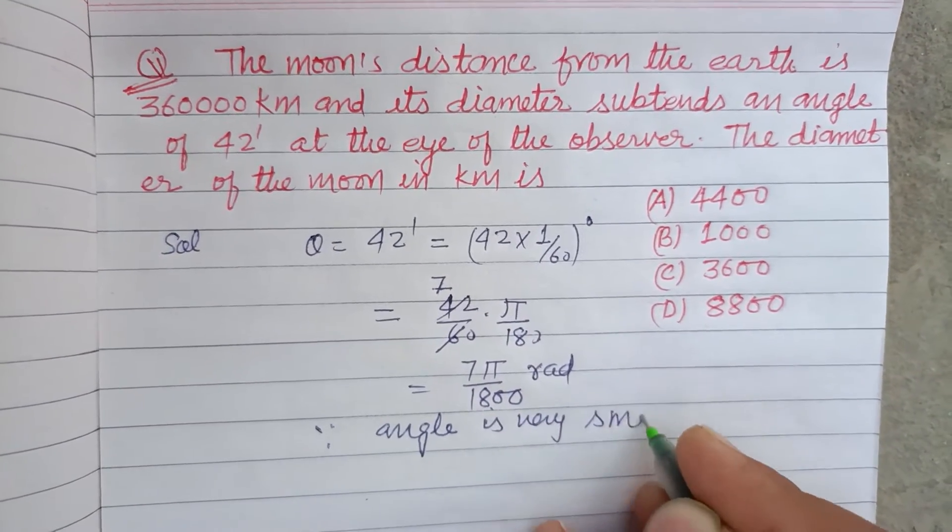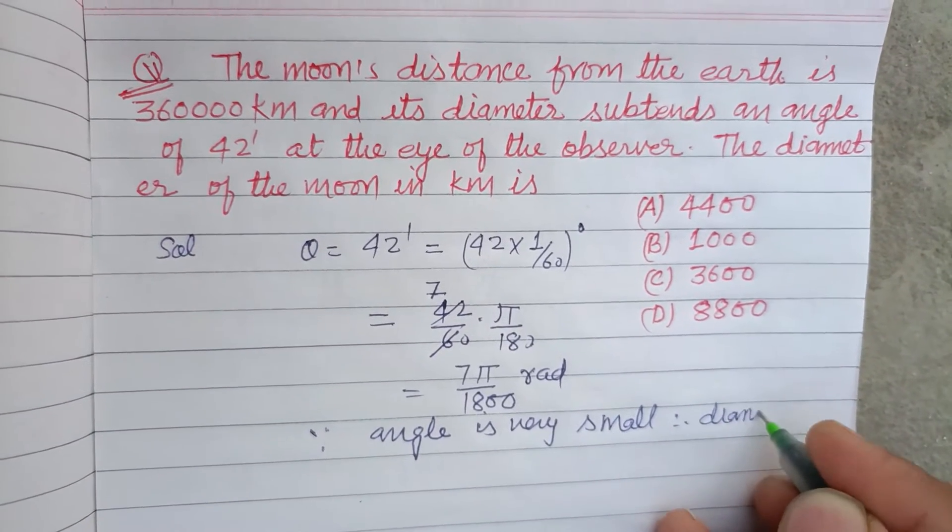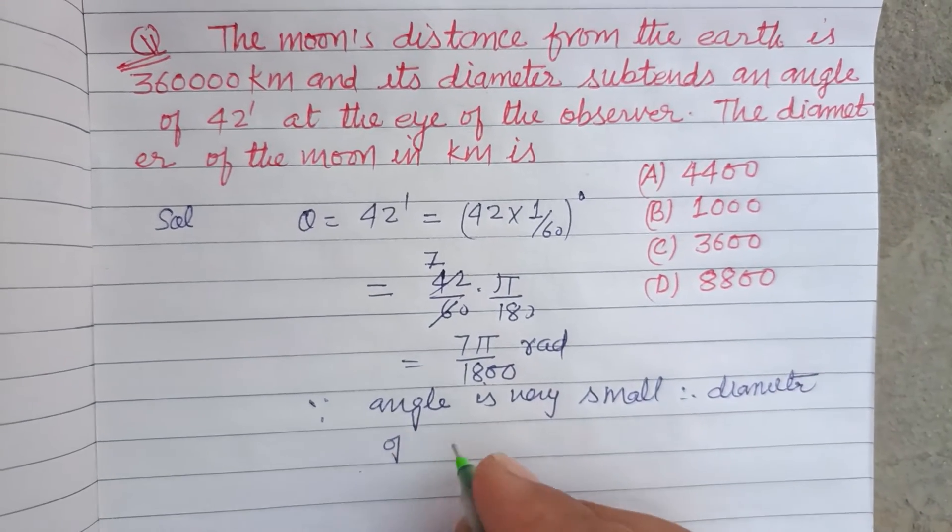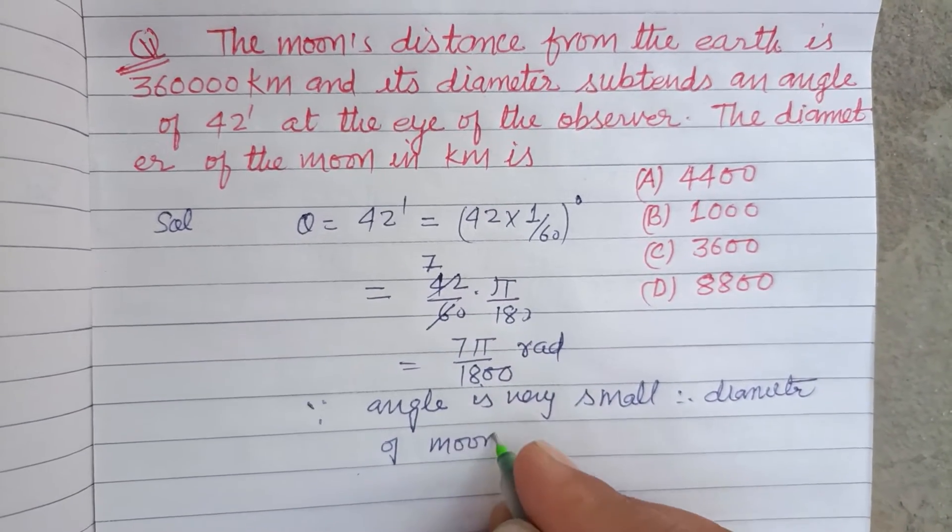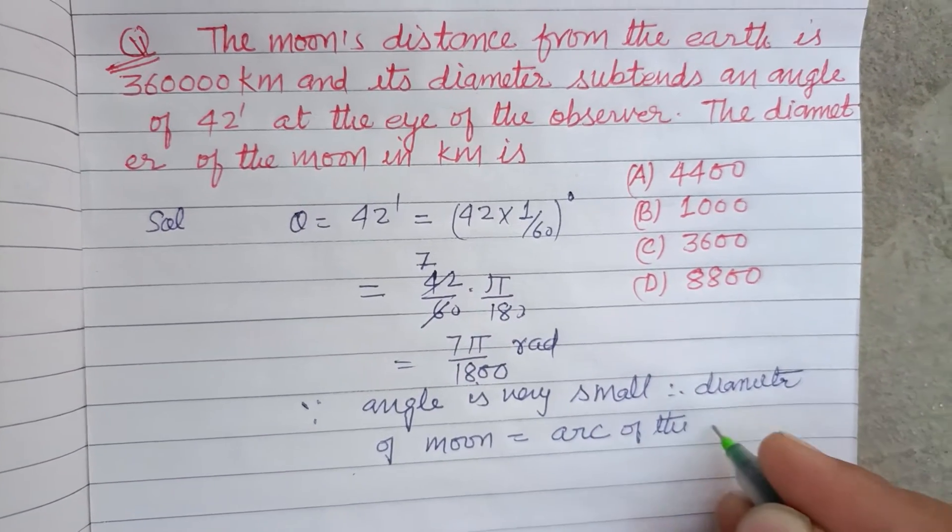Now since the angle is very small, therefore the diameter of the moon equals the arc of the moon.